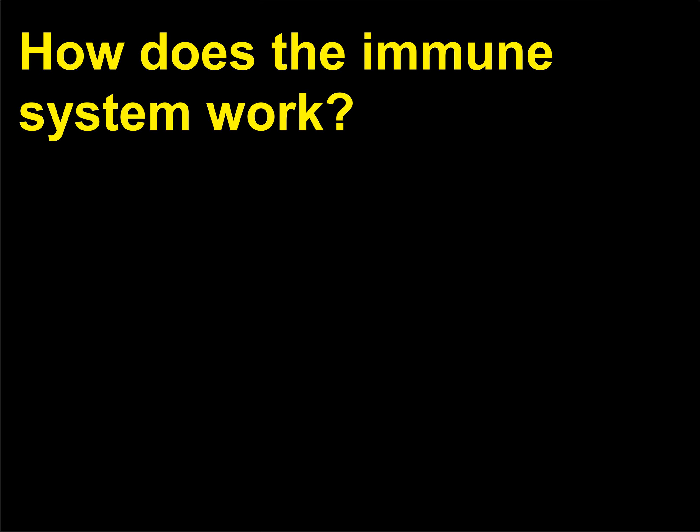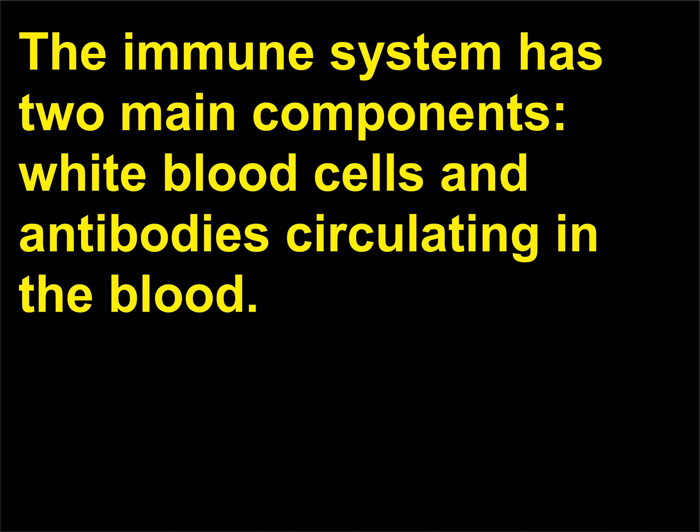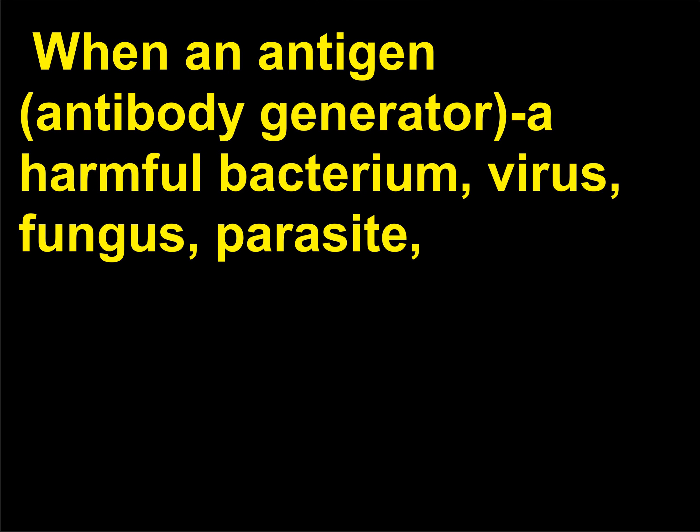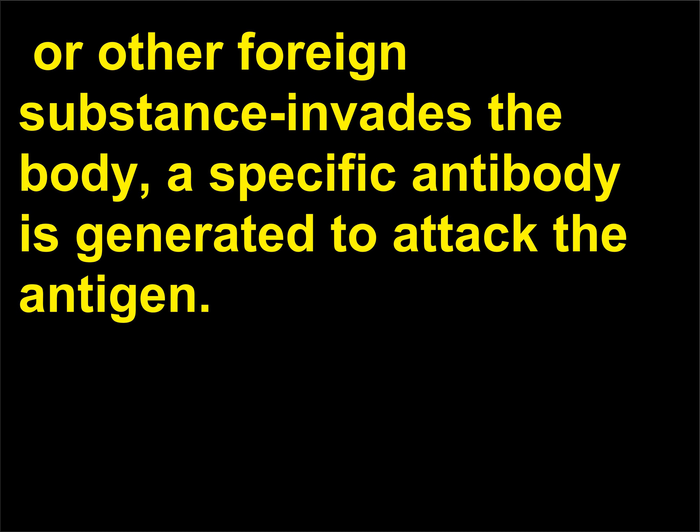How does the immune system work? The immune system has two main components: white blood cells and antibodies circulating in the blood. The antigen-antibody reaction forms the basis for this immunity. When an antigen — a harmful bacterium, virus, fungus, parasite, or other foreign substance — invades the body, a specific antibody is generated to attack the antigen.